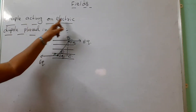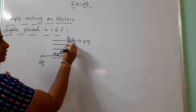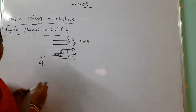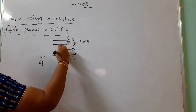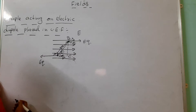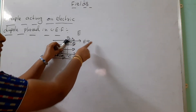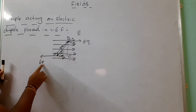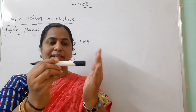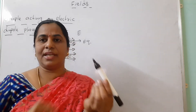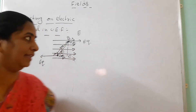Our third question is the couple acting on an electric dipole placed in a uniform electric field. We take a uniform electric field of intensity E. We place the electric dipole — negative charge and positive charge separated by 2A — inside this field. Two forces act: EQ on the positive charge and −EQ on the negative charge, in opposite directions. These two opposite forces cause the dipole to rotate.